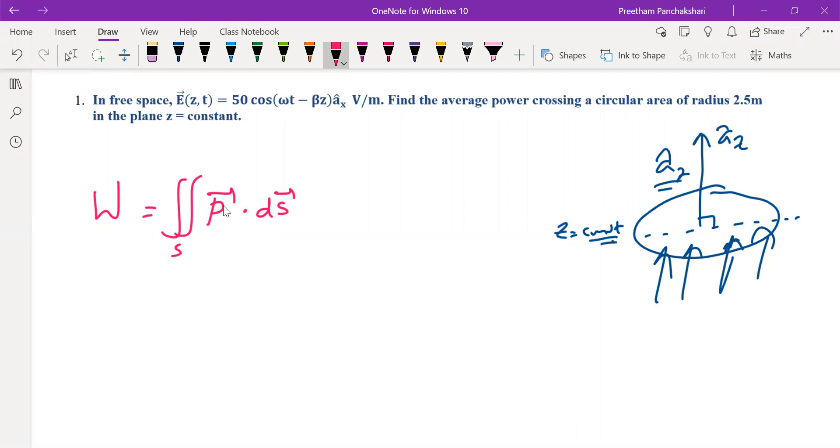Suppose if P is uniformly distributed on complete area then it can be taken as P into area. But in this case average power is required, so find average Poynting vector first. Then you have to multiply it.